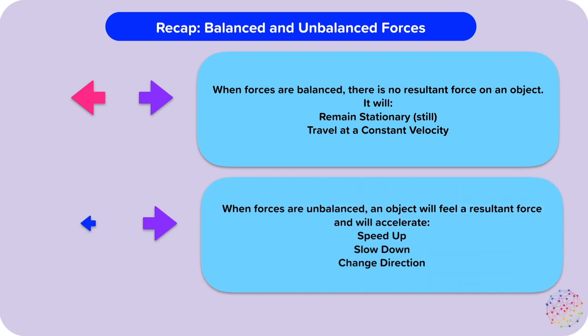However, when forces are unbalanced, an object will feel a resultant force, so it will accelerate. In this instance, the force to the right is much larger than the force to the left. This means there will be a resultant force to the right, an unbalanced force to the right. So our object will accelerate towards the right — this could mean it will speed up, slow down if travelling in the opposite direction, or change direction.